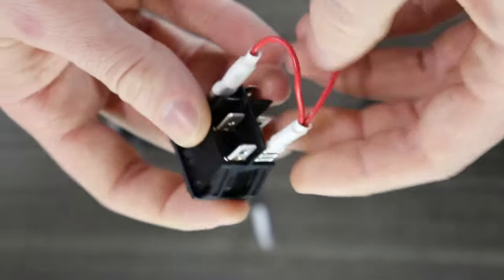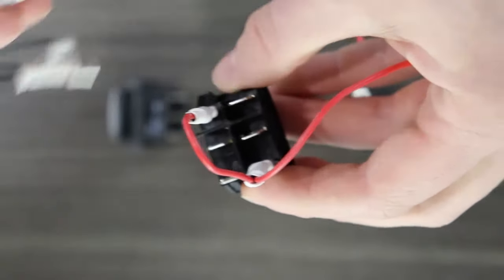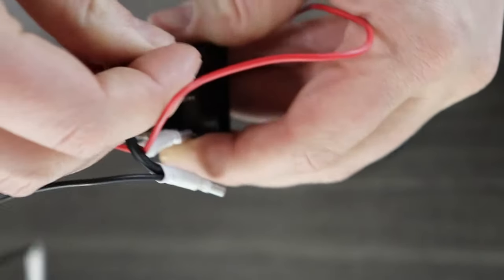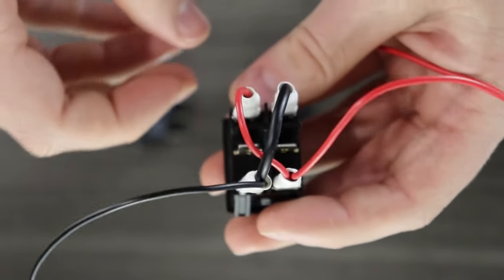Attach the wiring harness to the switch as shown. Be sure that the wires cross over diagonally. If you don't want to use spade connectors, you can choose to directly solder these wires to the switch instead.